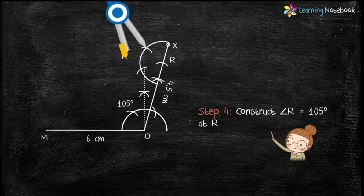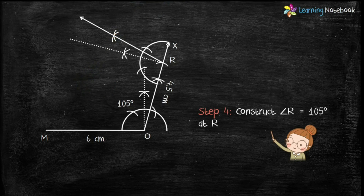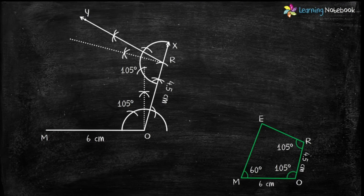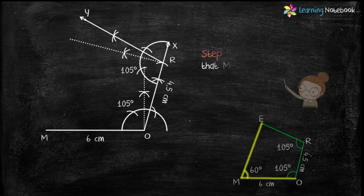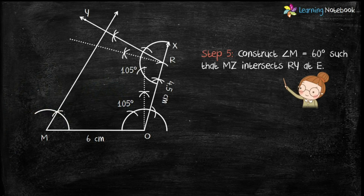By now we have constructed two sides and two angles. Now let's construct the last angle given to us, which is angle M equals 60 degrees. We have to construct this angle such that ray MZ intersects ray RY at point E. You may refer to my separate video for the step-by-step construction of angle 60 degrees.